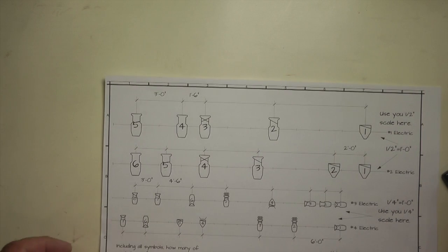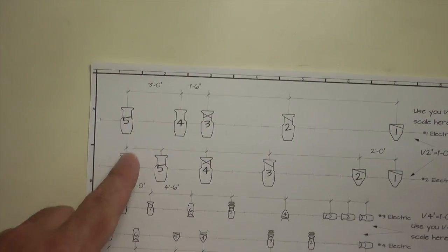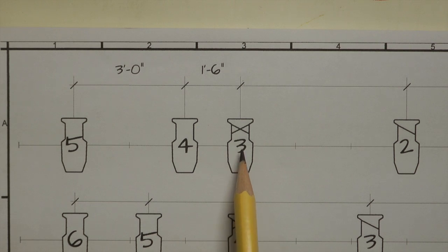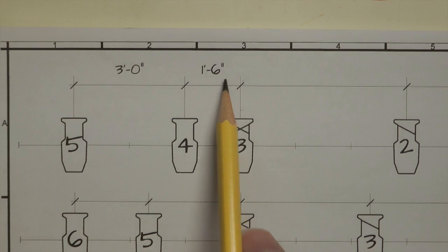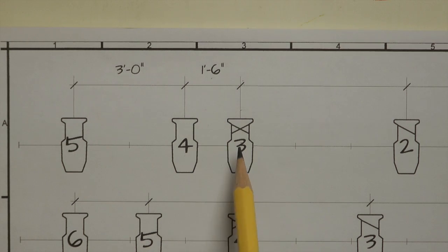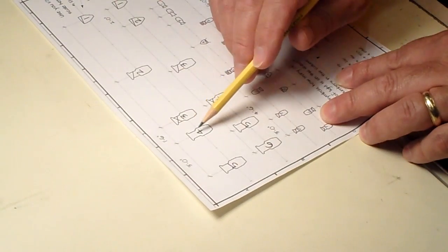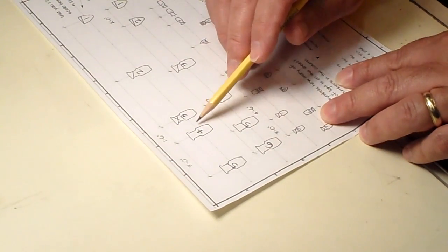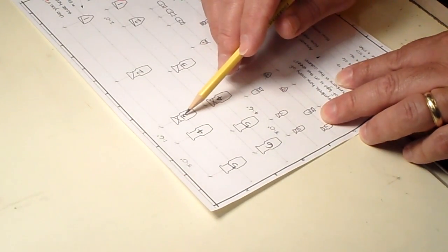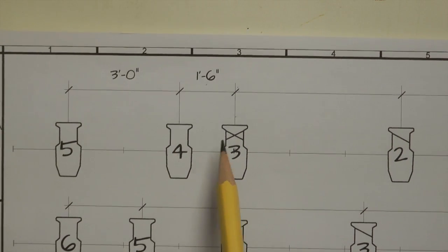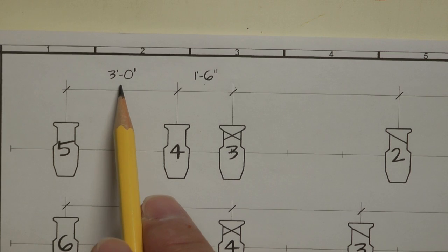So some samples. There's an example here of exactly how we want to write down our dimensions. The distance from the center of this light to the center of this light is one foot six inches. Now the dimensions are always measured from where the C-clamp is to where the C-clamp is, or center to center on a standard unit that has a single C-clamp. So that's the distance here, one foot six, and the distance between four and five is three feet.